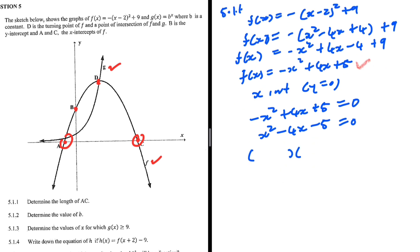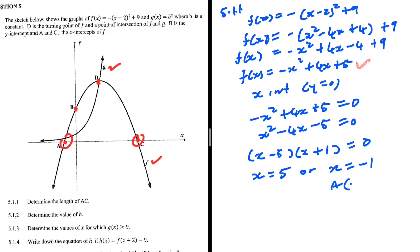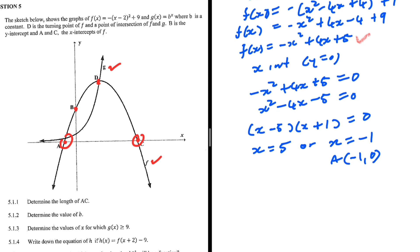So this is what we need to factorize. Factors of minus 5 which when we add give minus 4: that is minus 5 and plus 1. Minus 5 plus 1 is minus 4, and minus 5 multiplied by plus 1 is minus 5. So x equals 5 or x equals minus 1. So a is (minus 1, 0) and c is (5, 0).